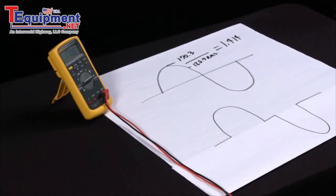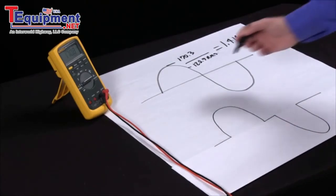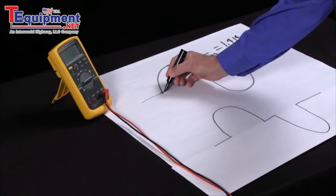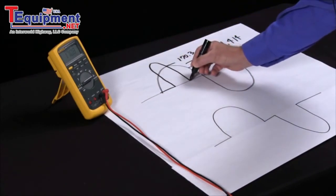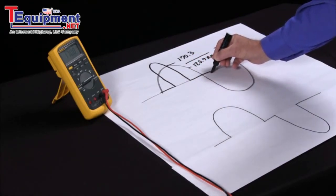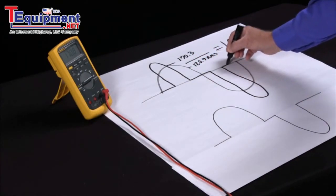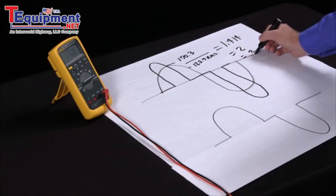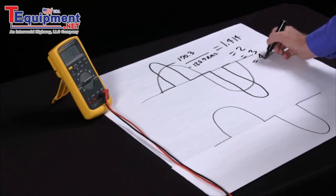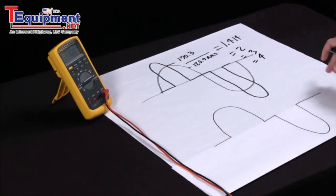Now, if we have a signal that is distorted or has quite a bit of harmonics in it, what happens is the peak gets higher and the RMS gets lower. So when I look at this ratio, I will start to see a ratio equal to 2, equal to 3, maybe equal to 4. This will be an indication that the higher the number is, the more harmonic distortion I have on the signal.